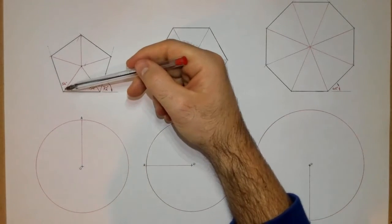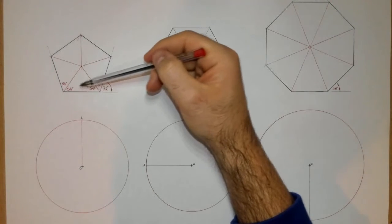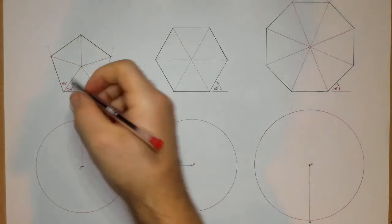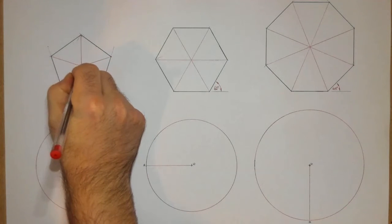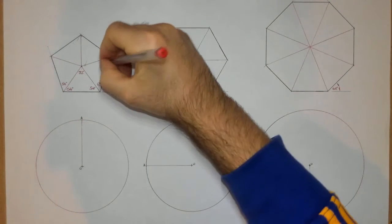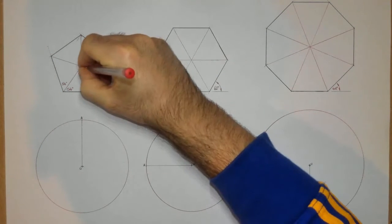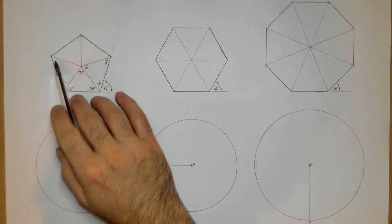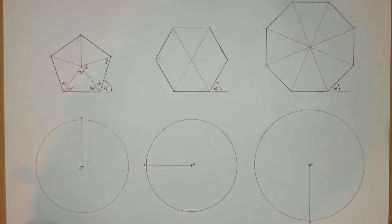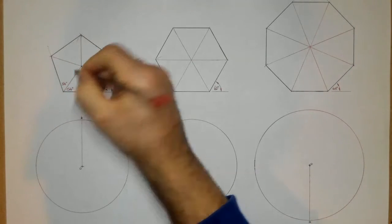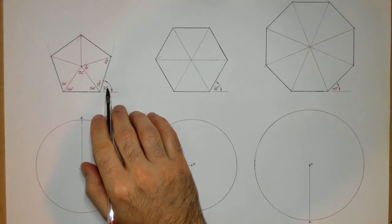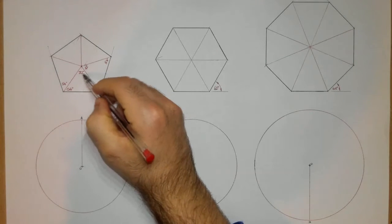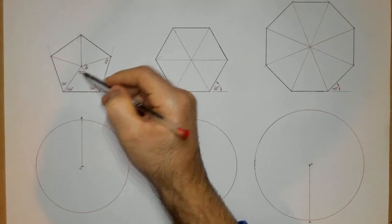We know that the angles inside a triangle add up to 180. So 54 and 54 is 108, which means the angle left up at the top is 72. And all these angles at the top here are 72 degrees. So the exterior angle of the pentagon is 72, and when you actually connect it up with the inside lines to the center, that angle there is also 72. That's the angle we're actually going to use to help us construct our pentagon.